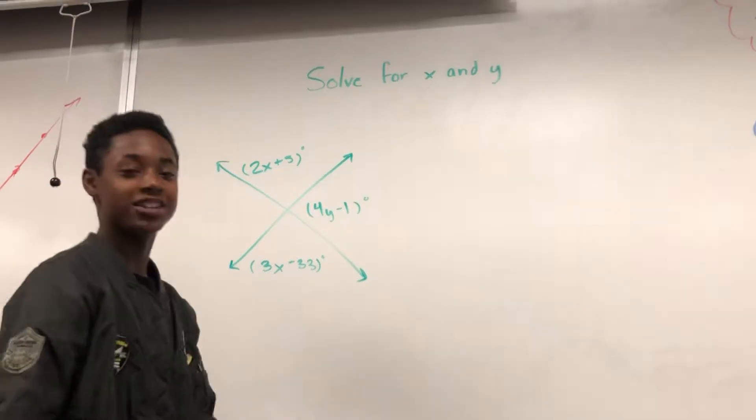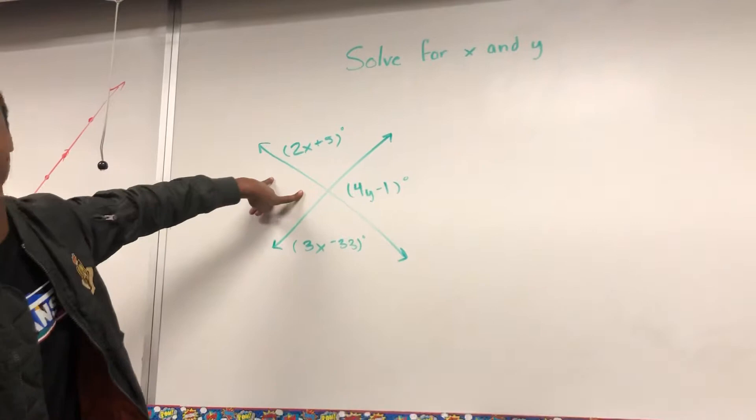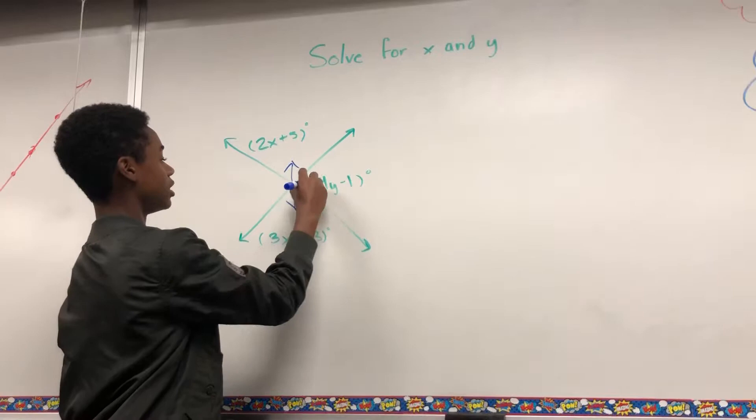Hola, class A. Okay, so now we're doing vertical angles. Vertical angles mean these two are congruent and these two are congruent.